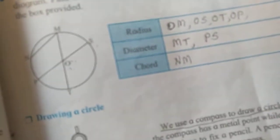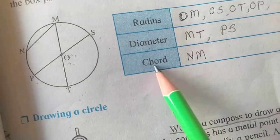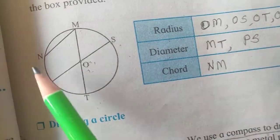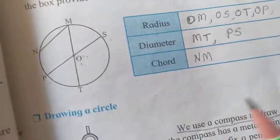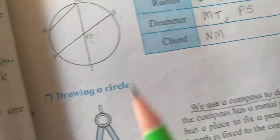Now, next one: chord. NM is the chord, which is joining any two points of the circle. NM is the chord.